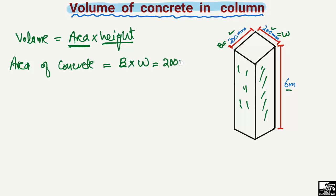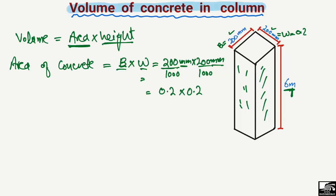So it's 200 millimeters multiplied by 200 millimeters. Since the height of the column is given in meters, we can convert millimeters into meters for consistent units. Dividing 200 by 1000 gives us 0.2 meters for both breadth and width.